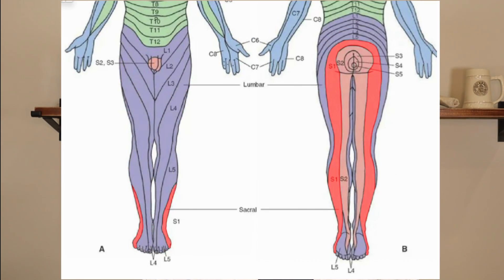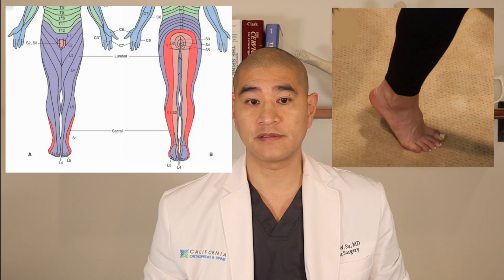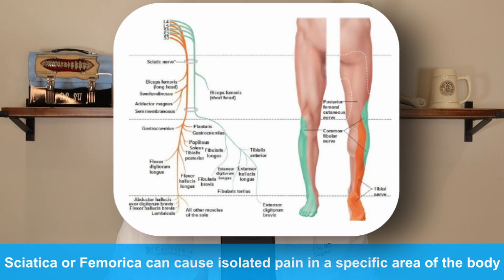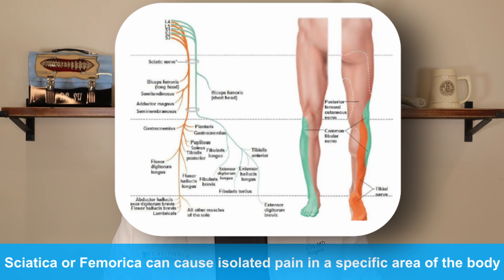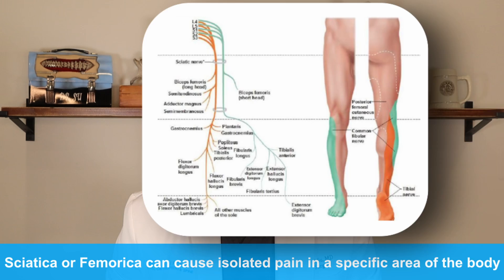The S1 nerve is part of the sciatic nerve and goes to the buttock, down the back of the leg, and can go to the side of the foot. The S1 nerve plugs into the calf muscle, which means you might have difficulty coming up on your tiptoes. It's important to remember that even though the sciatic and femoral nerves go all the way down to the foot, pinching of those nerves can sometimes cause isolated pain only in the buttock, only in the back of the thigh, or even only in the foot — so you'll have to work with your doctor to determine whether you really have sciatica.